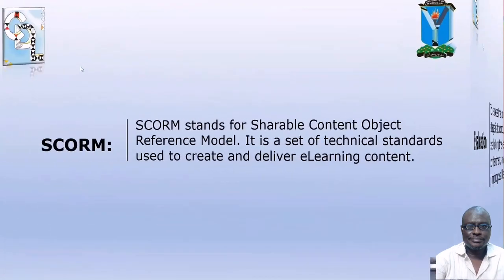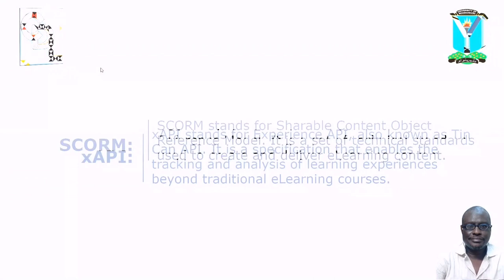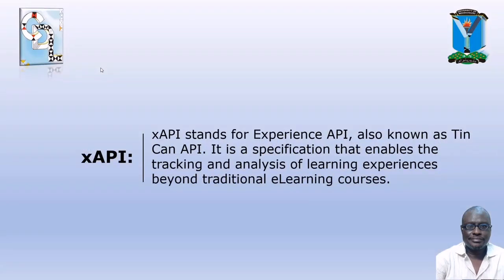A few more things to wrap up. SCORM stands for Shareable Content Object Reference Model. It is a set of technical standards used to create and deliver e-learning content. SCORM enables e-learning content to be shared across different learning management systems and ensures that the content is compatible with different devices and platforms. SCORM courses are typically packaged as zip files that contain all the necessary course materials, such as the course content, multimedia elements and assessments. xAPI stands for Experience API, also known as Tin Can API — it is a specification that enables the tracking and analysis of learning experiences beyond traditional e-learning courses.